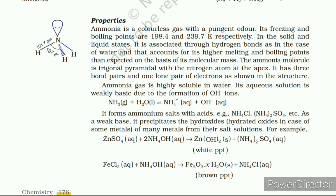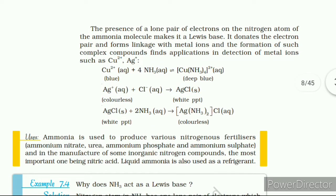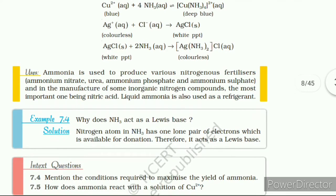7.5 Nitric Acid. Nitrogen forms oxo-acids such as H₂N₂O₂ (hyponitrous acid), HNO₂ (nitrous acid), and HNO₃ (nitric acid); amongst them HNO₃ is most important. Preparation: In the laboratory, nitric acid is prepared by heating KNO₃ or NaNO₃ with concentrated H₂SO₄ in a glass retort. On a large scale it is prepared mainly by the Ostwald process, based upon catalytic oxidation of ammonia by atmospheric oxygen. Nitric oxide thus formed combines with oxygen giving NO₂, which dissolves in water to give HNO₃; the NO formed is recycled.